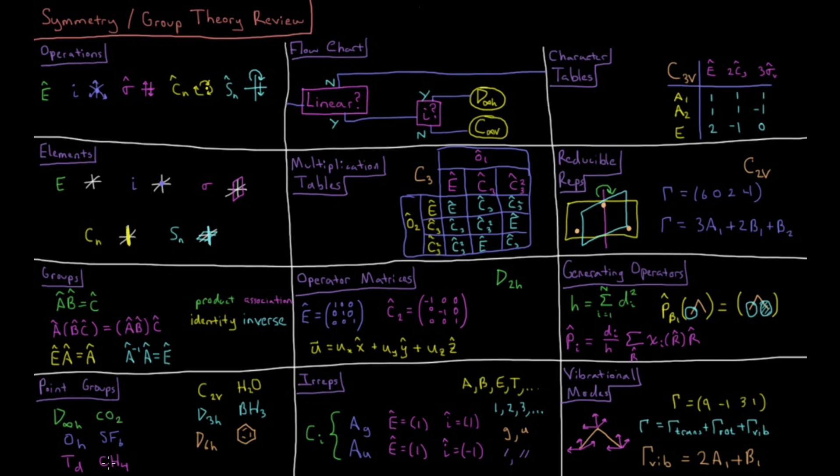So we have examples of molecules which fall into these various point groups. And we have a flow chart which determines, given the structure of a molecule, we answer some questions about it, and answering yes or no to whether it has those particular structural properties or symmetry elements, what point group it ultimately falls into.